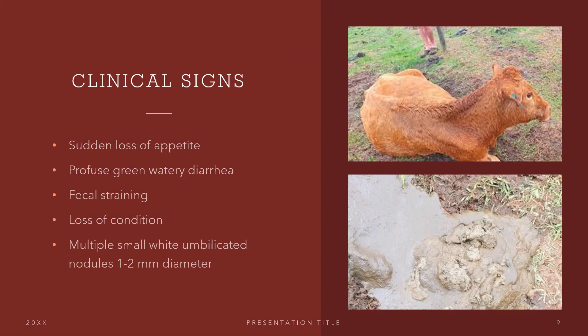What are the clinical signs? First, we have sudden loss of appetite. We also have profuse green watery diarrhea, as shown below. We have fecal straining, loss of condition, and multiple white umbilicated nodules from 1 to 2 mm in diameter.